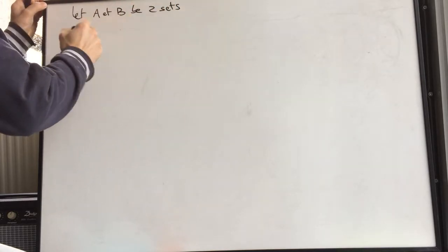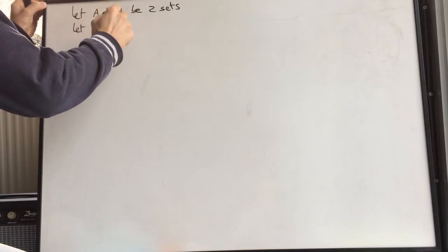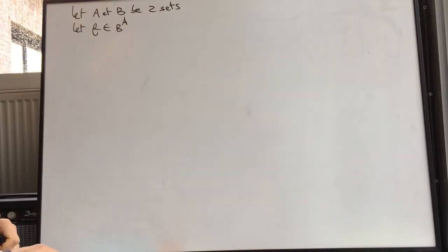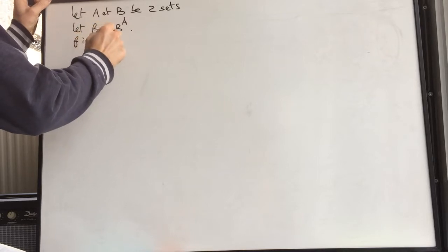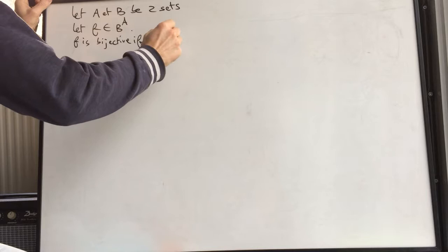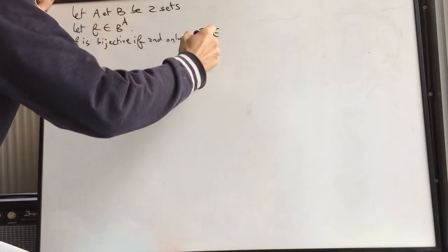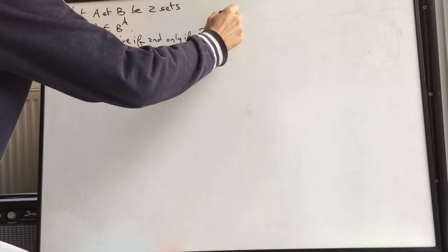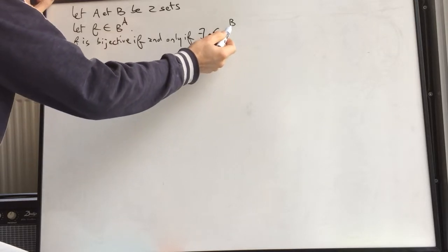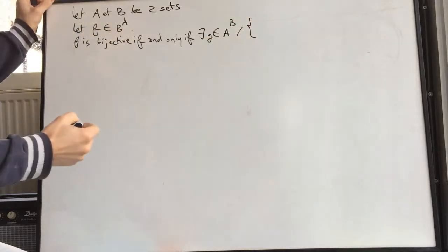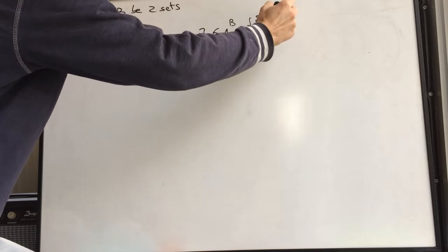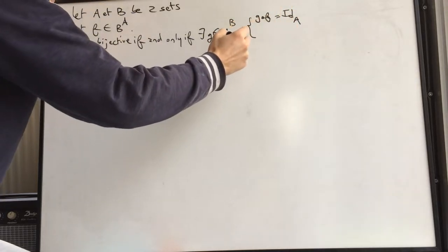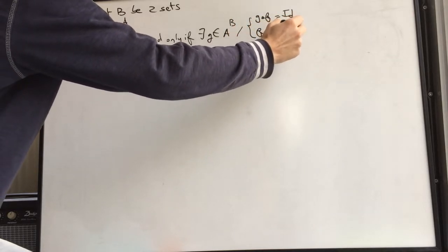Let A and B be two sets. Let f be an element of B to the power of A — meaning f is a map from A to B. The property states that f is bijective if and only if there exists a unique g that belongs to A to the power of B, meaning g is a map from B to A, such that g∘f is equal to the identity map of A, and f∘g is equal to the identity map of B.